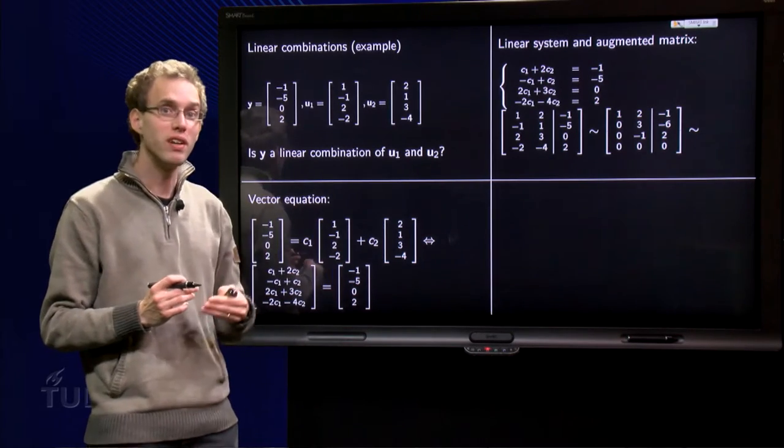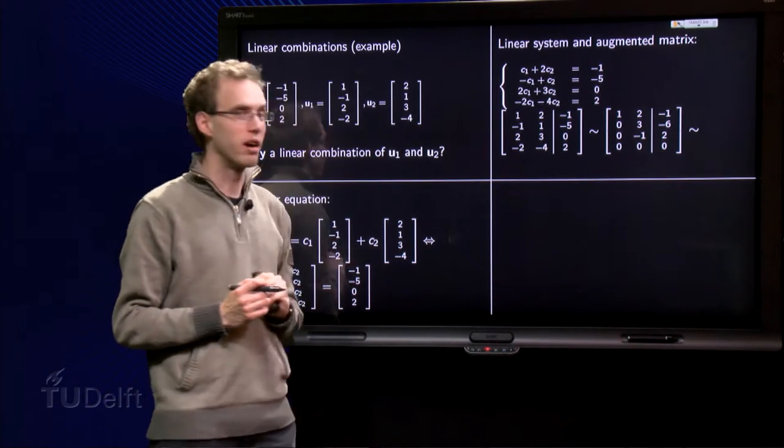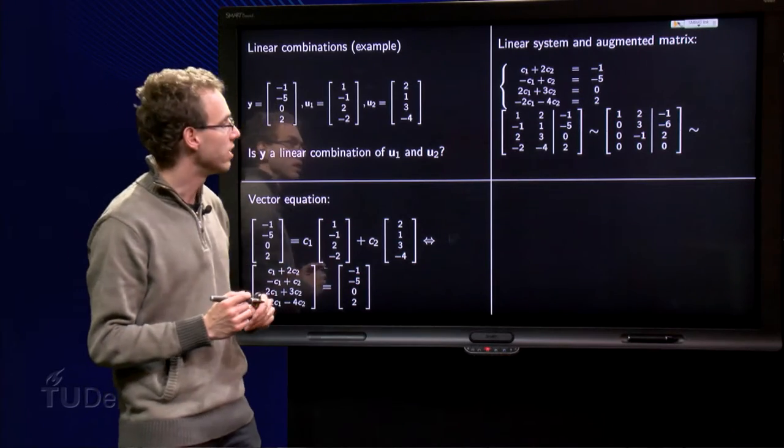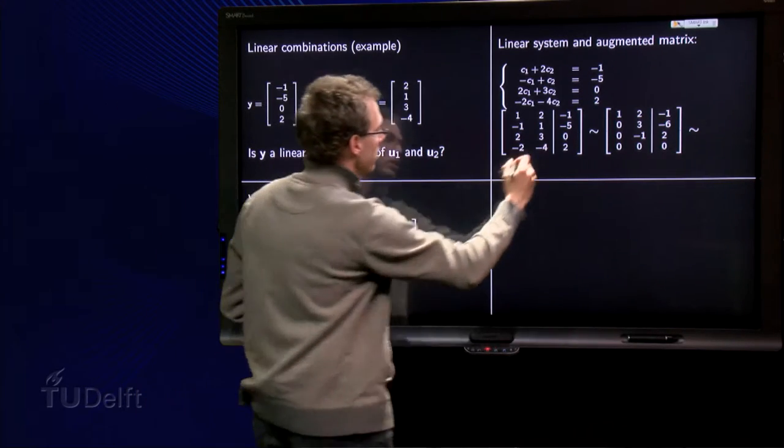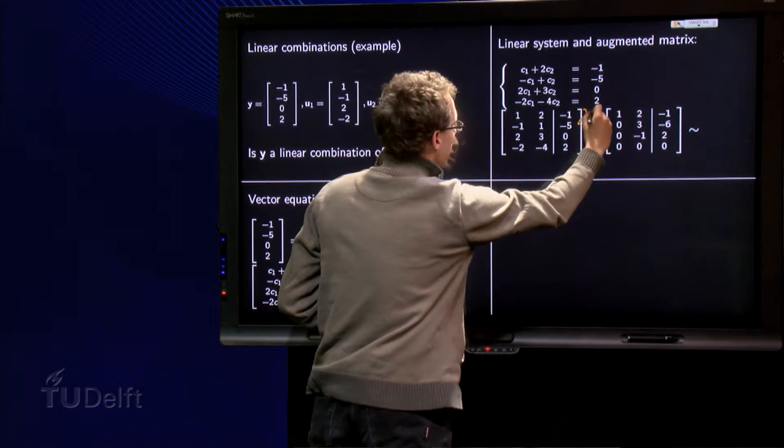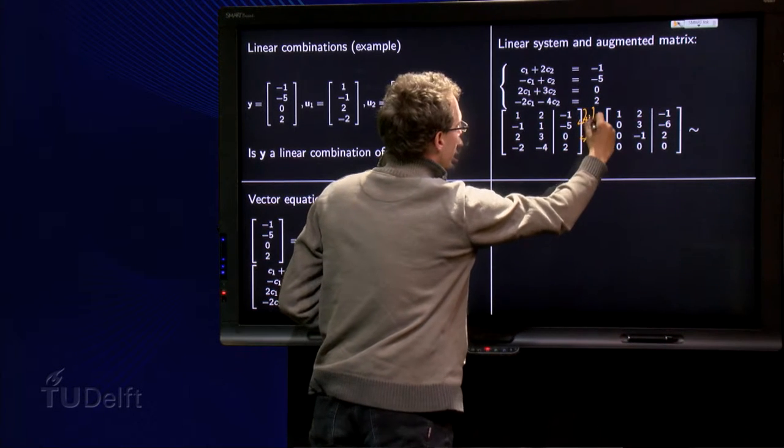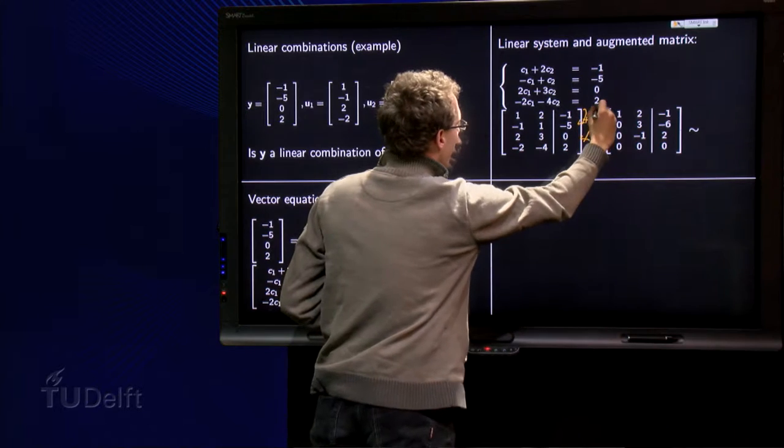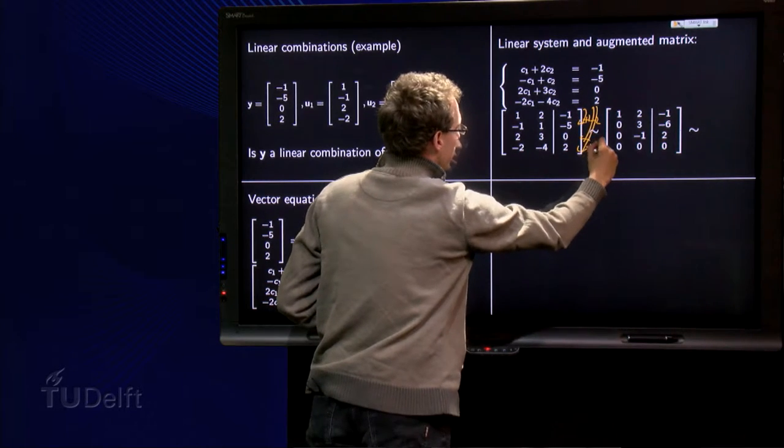And we know how to solve a linear system. We form the augmented matrix first, and then we do the row reduction. So we add this row once, subtract it over here two times, and add it here twice.